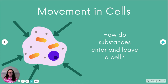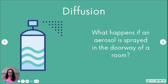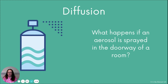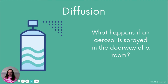Diffusion is a process when a gas can spread through the air — particles will move. Think about what happens if you had an aerosol sprayed near the doorway of a room. If you were stood by the doorway, in the middle of the room, or in the far corner of the room, which person would smell that gas first?